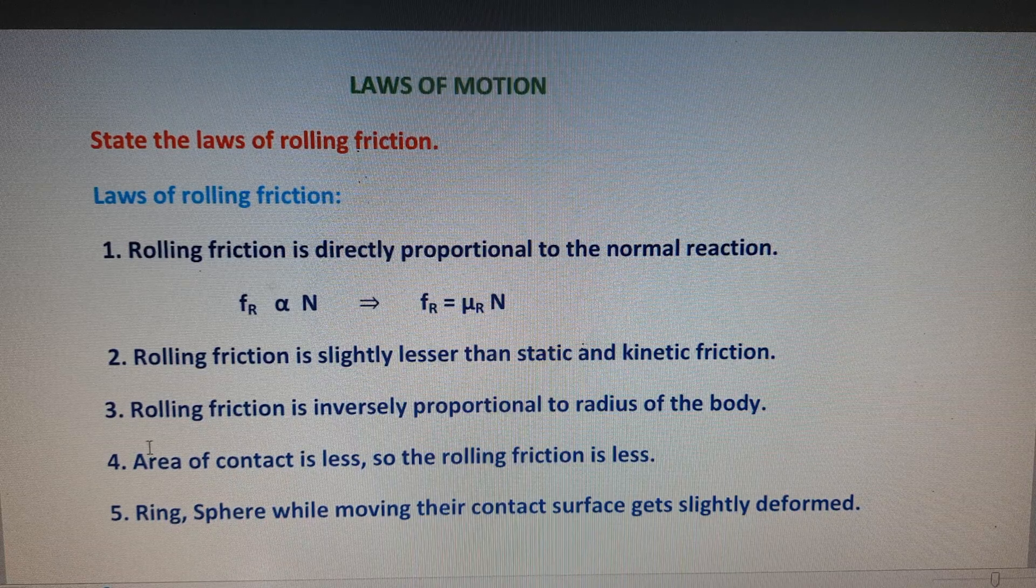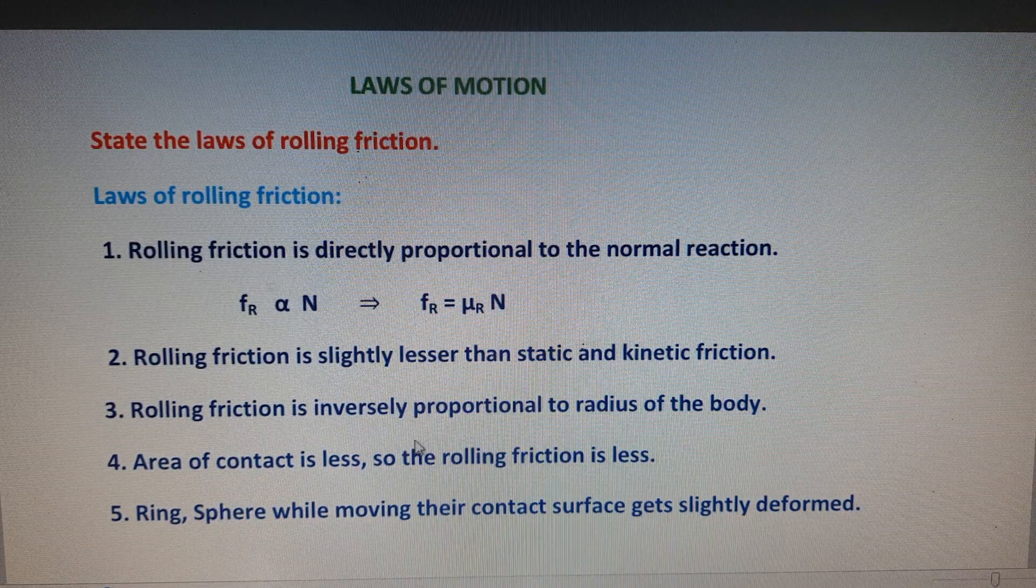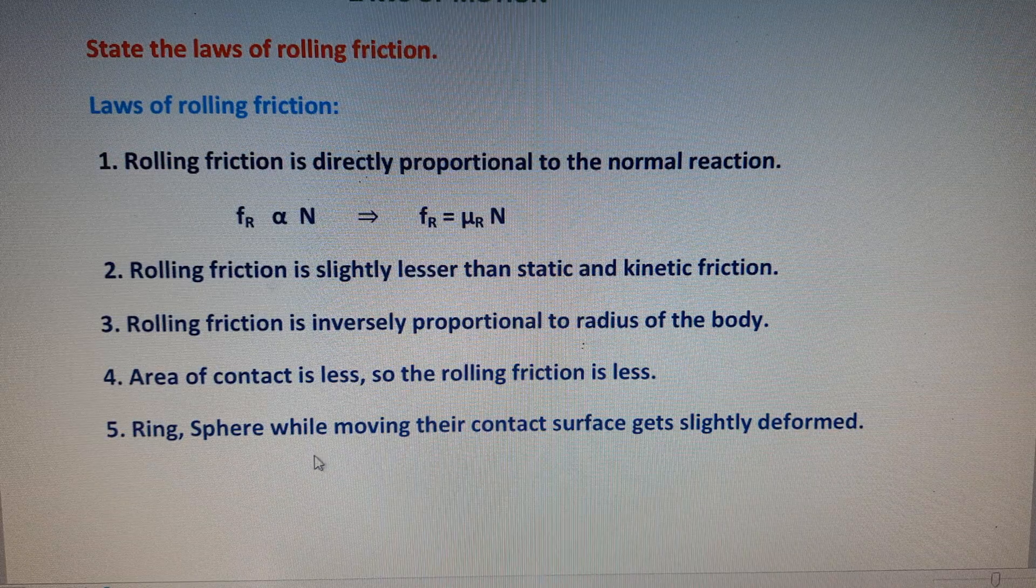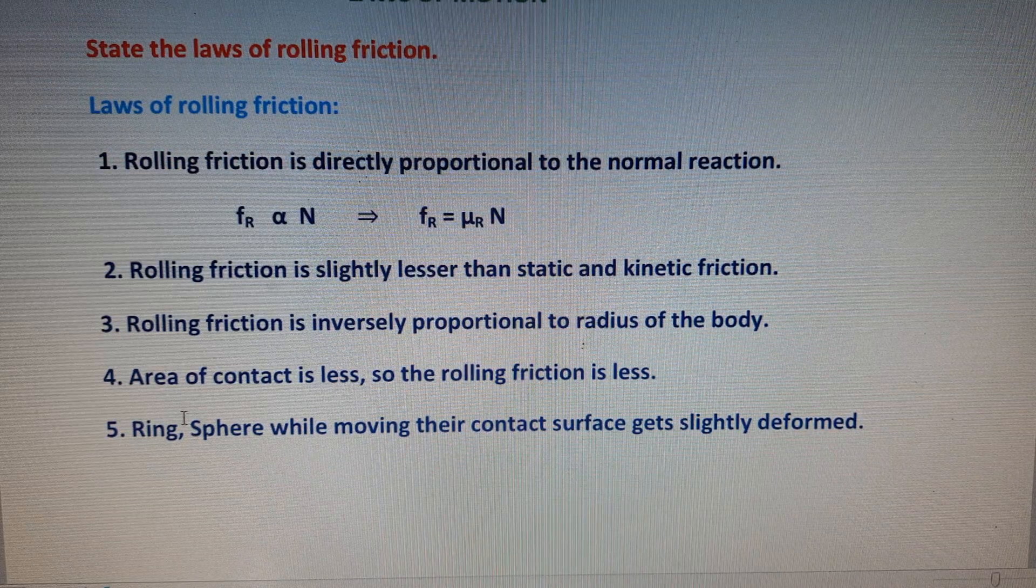Third one: rolling friction is inversely proportional to the radius of the body. And fourth one: area of contact is less, so the rolling friction is less.